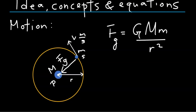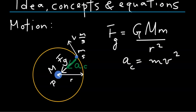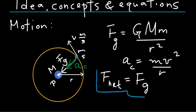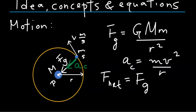Since this satellite is moving in uniform circular motion, it will also have an acceleration towards the center of the orbit — the centripetal acceleration A sub c — given by the speed squared over the radius. The free body diagram shows the only force acting on the satellite is the gravitational force. So the net force equals F sub g. From Newton's second law, net force equals mass times acceleration, which in this case is the centripetal acceleration.